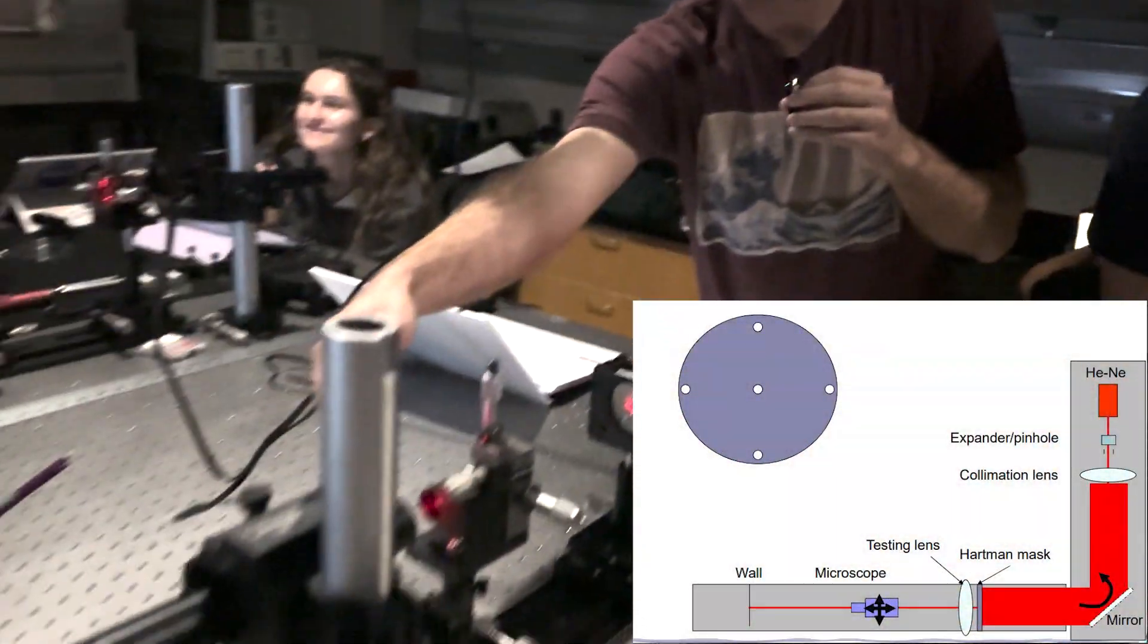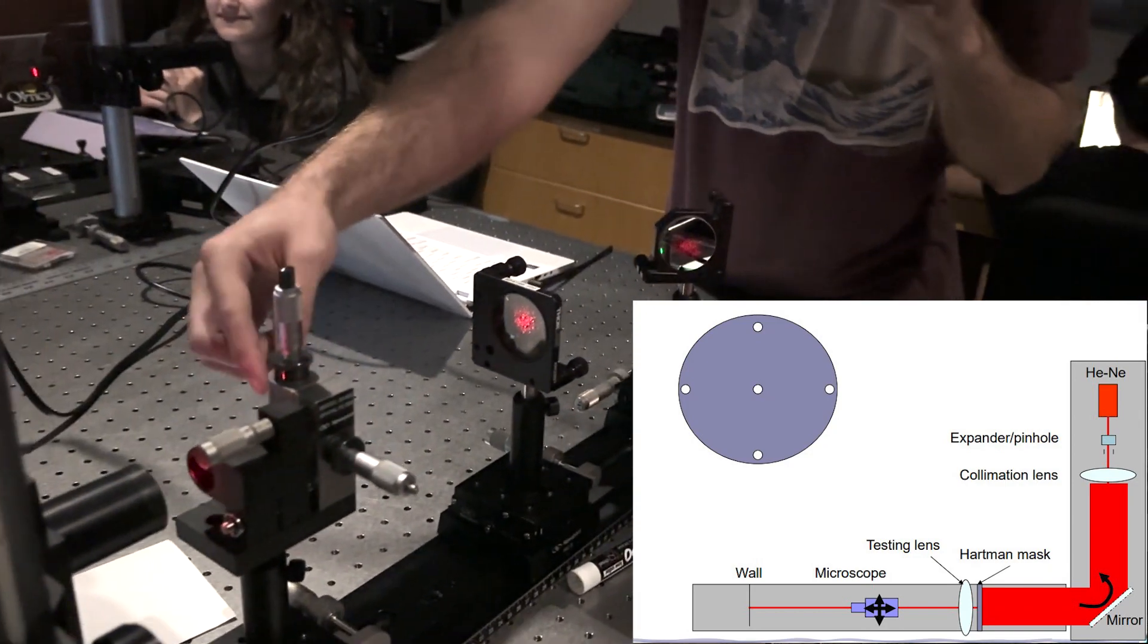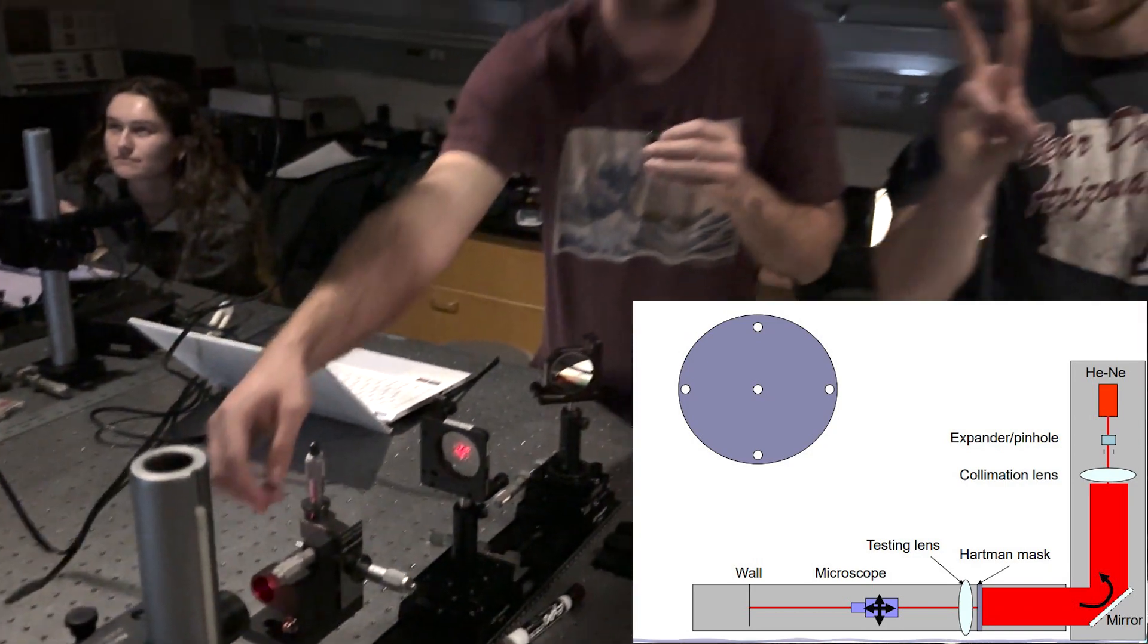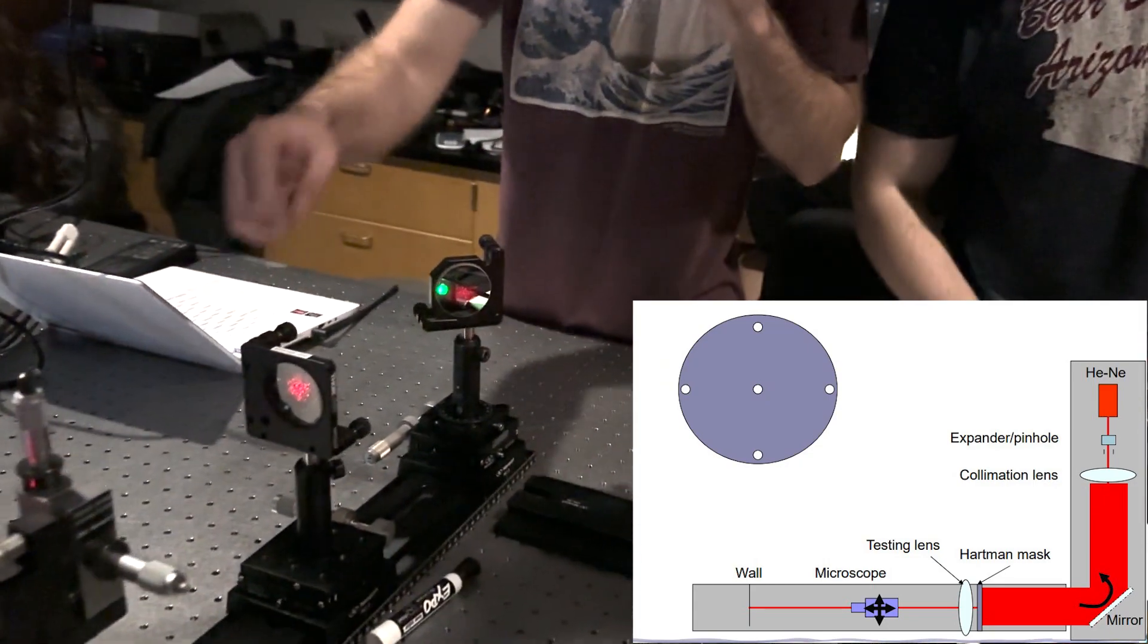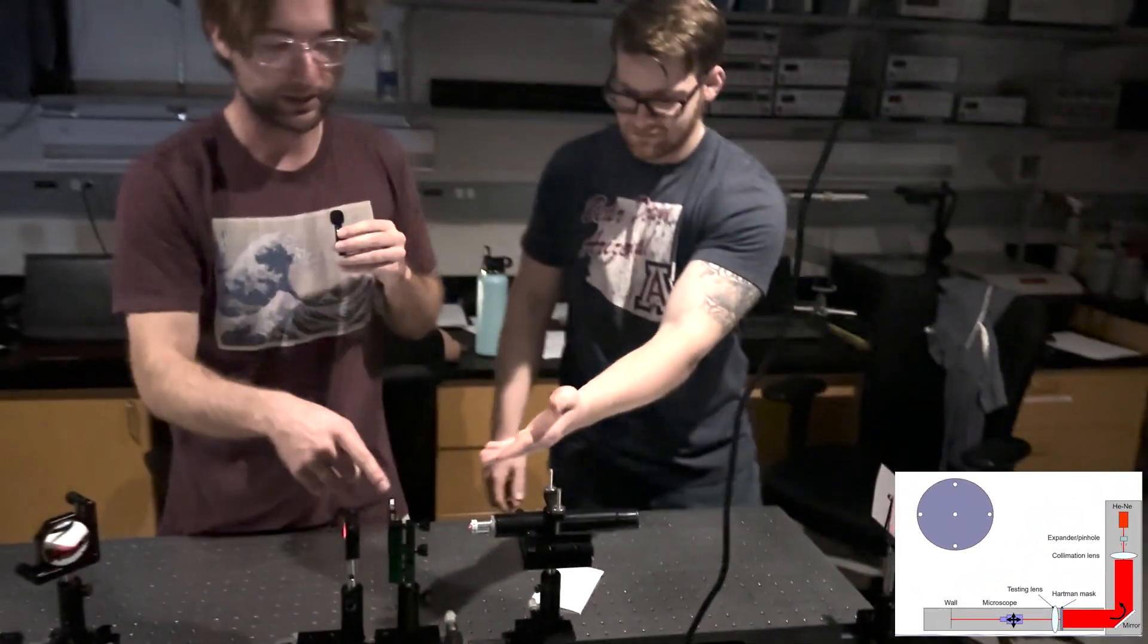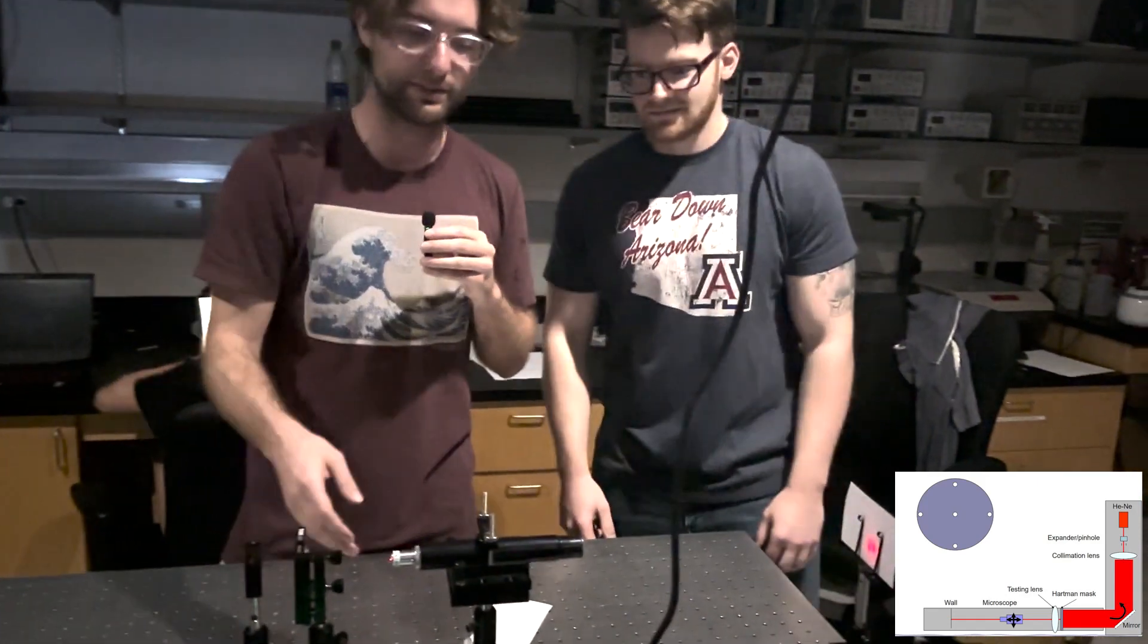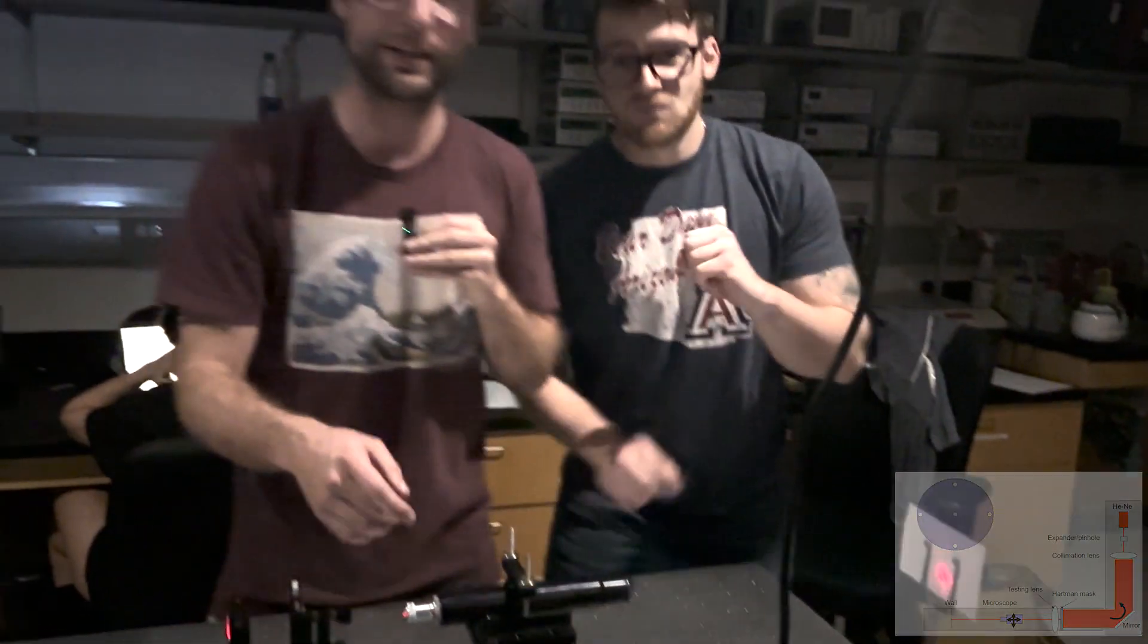It's setup time. First we're starting with our source, our laser source. Then we have our Keplerian beam expander. Our spatial filter has a 20 micron pinhole and a 0.4 NA. Next, we have our 200 millimeter lens, that's our collimation lens. A mirror just to reflect it onto our next rail. This is our mask here. Next, we have our test lens, our microscope. Our objective is a 0.25 NA. And then we have our mask grid right here.